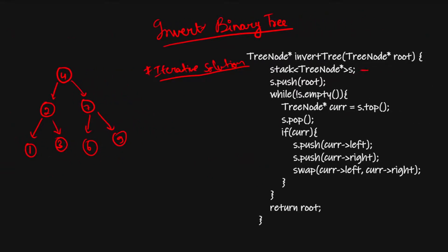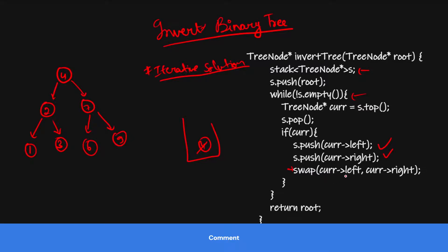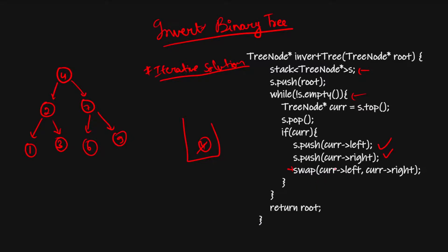Looking at the code: we use a stack, push the root first, then traverse. We pop the current top element, check if it is null — if not null, we push its left and right children onto the stack, then swap left and right using a temp variable. After the traversal we return root. The time complexity is O(n) and the space complexity is also O(n) for the stack.